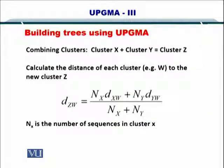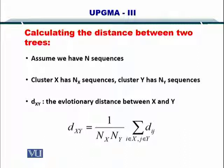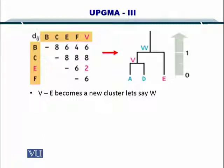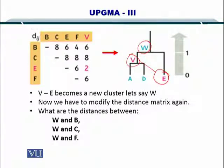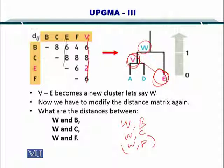The formula to compute the distance between a sequence and another sequence or a sequence and a cluster is given here as you would know by now and the distance between two trees can be computed using this formula. So, let's continue with our example. If you remember, we had created a cluster W out of V and E. So we were in need to calculate the distance between W and B, W and C, W and F. And as a result, V and E will be eliminated from the distance matrix. So let's see how we calculate the distance.